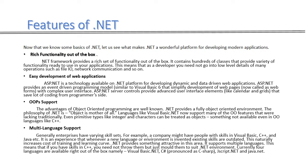The last feature is multi-language support. Enterprises have varying skill sets — for example, a company might have people with skills in Visual Basic, C++, and Java. Whenever a new language or environment is invented, existing skills become outdated, which increases training costs and learning curves. .NET provides something attractive: it supports multiple languages. If you have skills in C++, you need not discard them but just mold them to suit the .NET environment. Currently four languages are available right out of the box: Visual Basic .NET, C#, JScript .NET, and Java .NET.